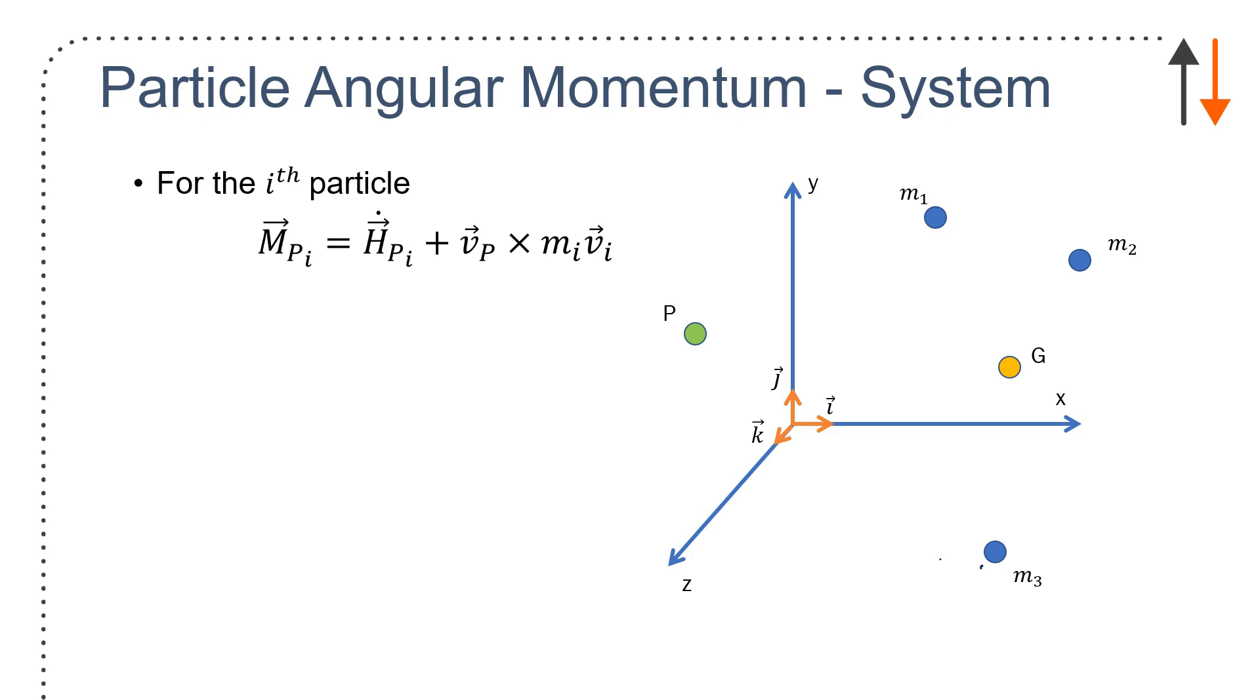And we can look at a particular point. So if I look at some of the moments about p for each of the particles, I would have the angular momentum, or the rate of change of angular momentum, plus velocity p cross with m_i v_i.